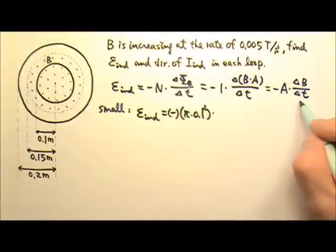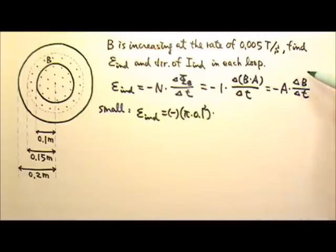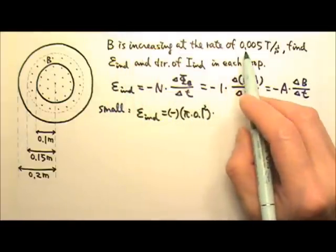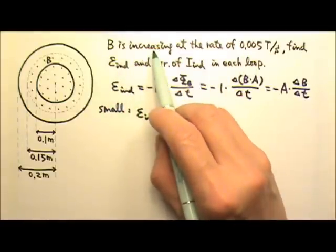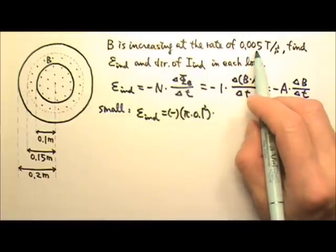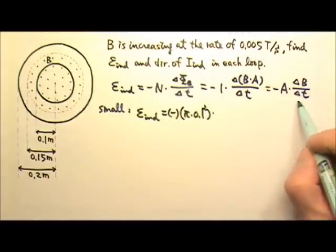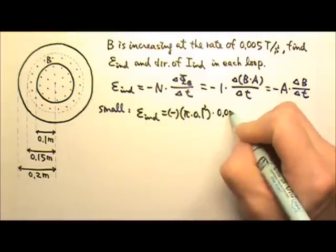And that times the delta B over delta T. That is the rate at which the magnetic field changes. And the magnetic field is increasing at this rate. That means the magnetic field is changing at the rate of 0.05 teslas per second. So that's the delta B over delta T, 0.005.